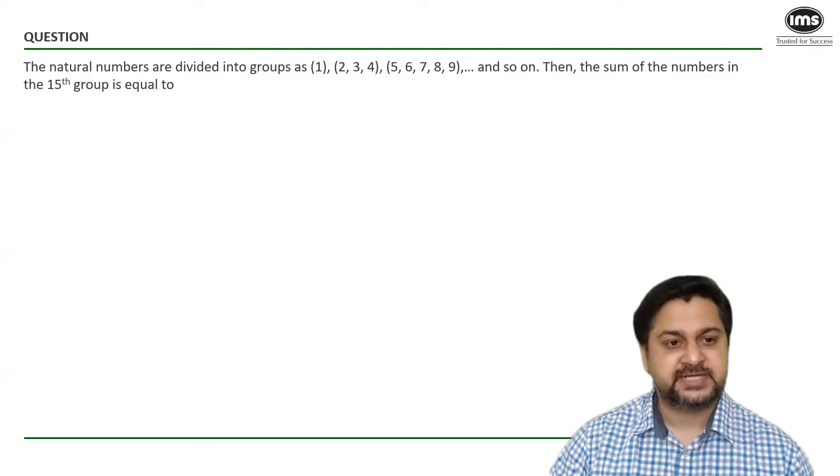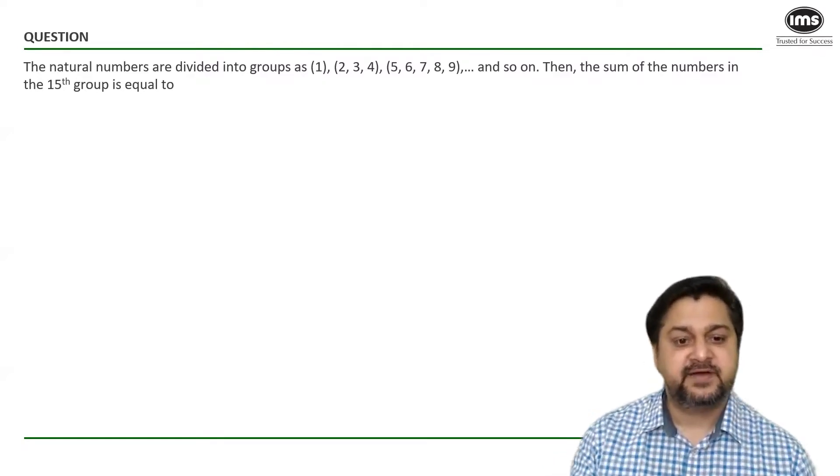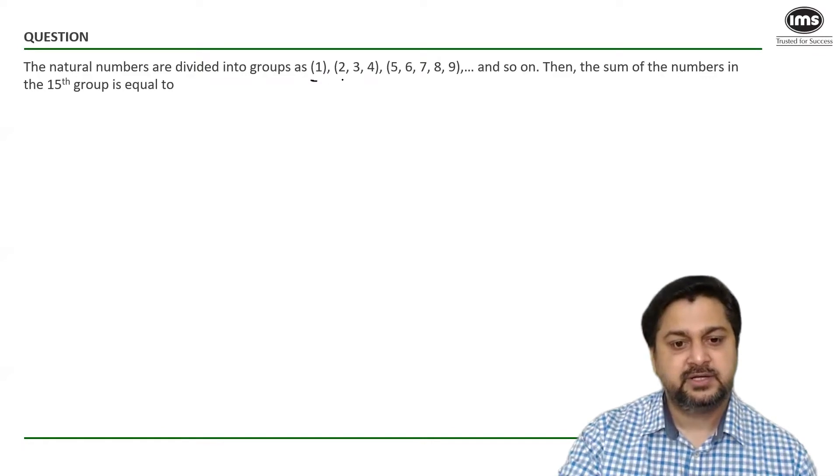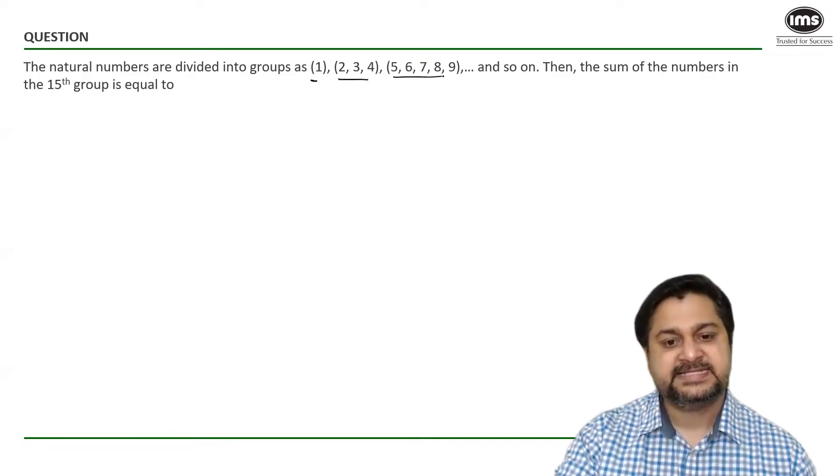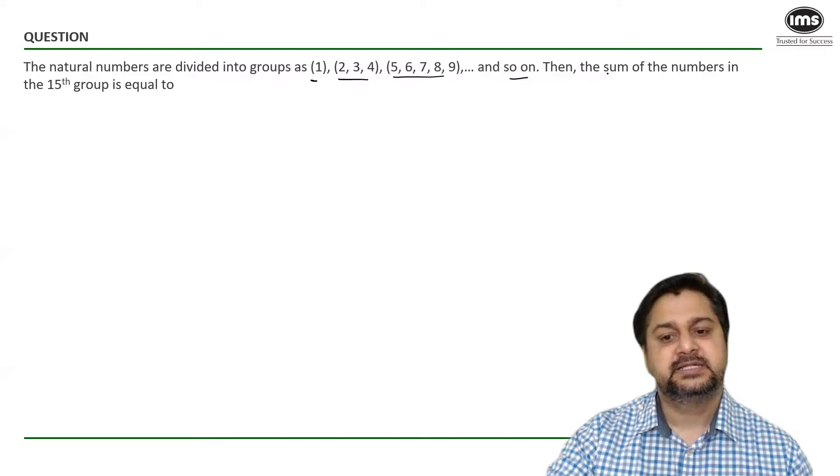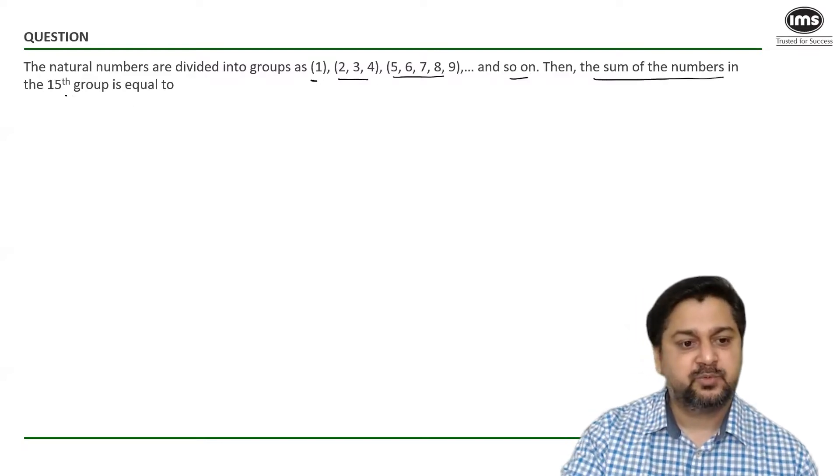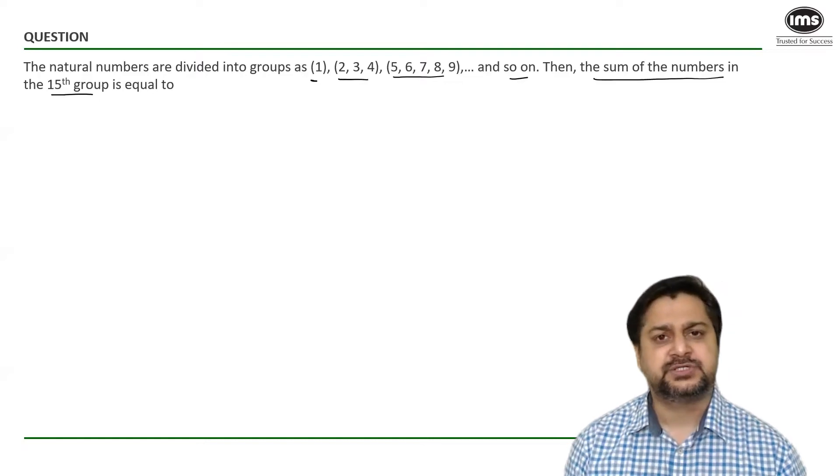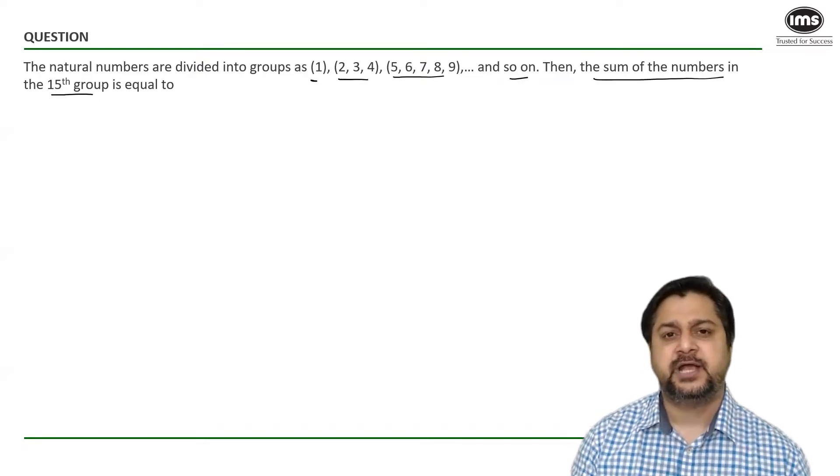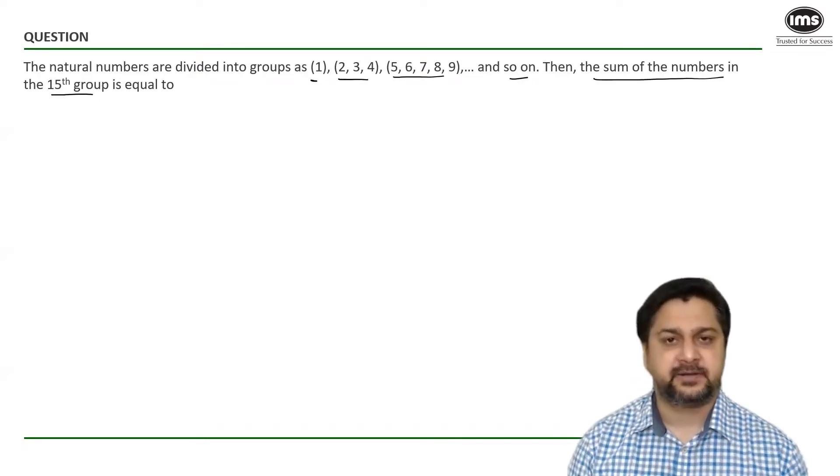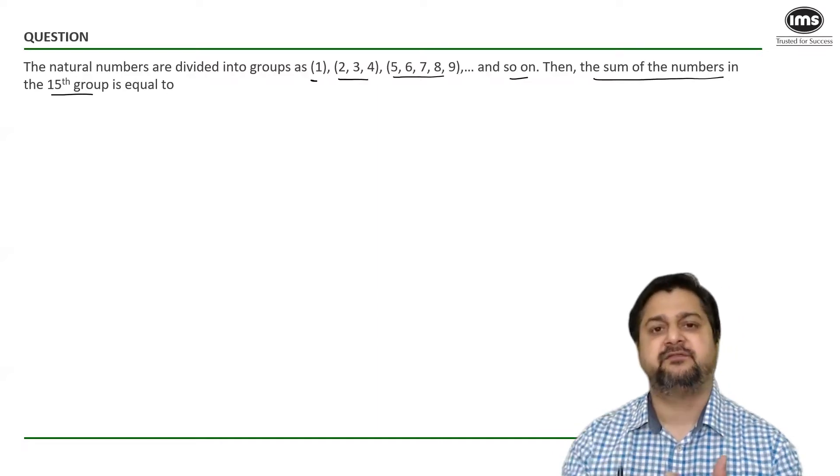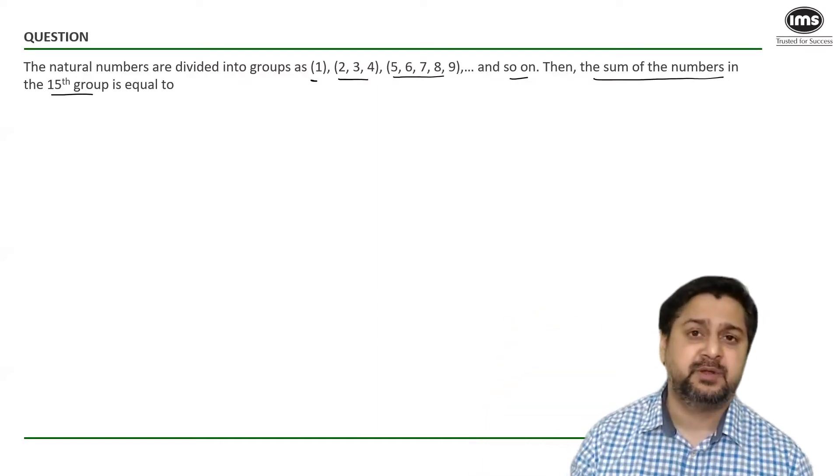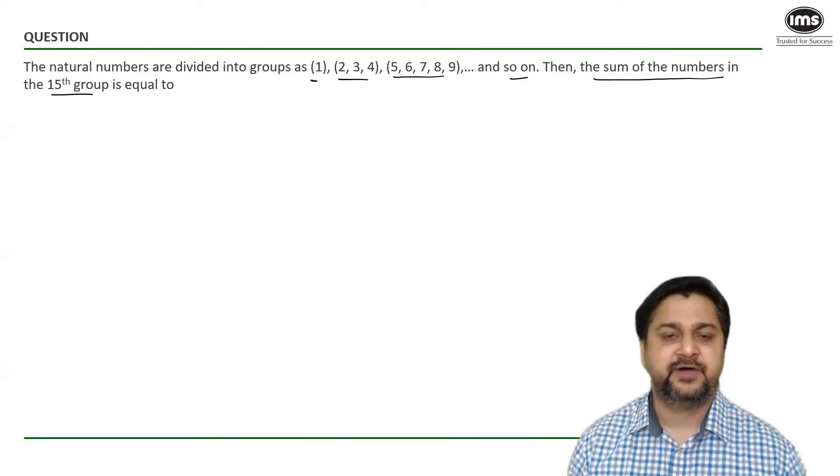The question says the natural numbers are divided into groups as (1), (2, 3, 4), (5, 6, 7, 8, 9) and so on. Then the sum of the numbers in group 15 is equal to what? Now in these types of questions, what is recommended is that you try to find out the pattern here, because it would be very difficult to actually reach up to group number 15 and then try to find out the answer.